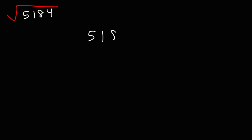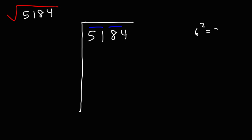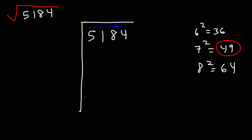Let's begin by rewriting the problem and breaking up the 4 numbers into pairs of 2. Let's focus on 51. What is the perfect square that is less than 51? We know that 6 squared is 36, 7 squared is 49, and 8 squared is 64. So the highest perfect square just under 51 is 49. We're going to use 7. 7 times 7 is 49. Subtracting 51 by 49 gives us 2.